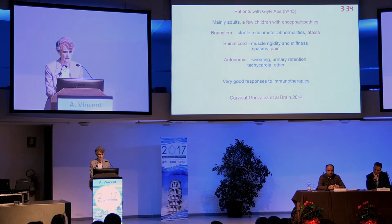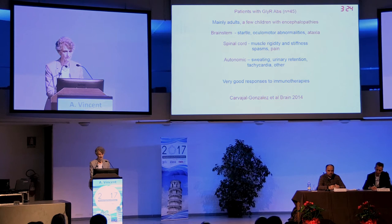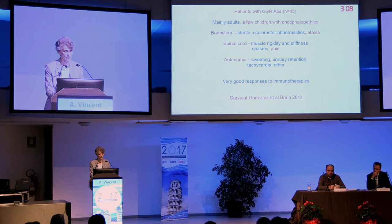Patients with glycine receptor antibodies - there are some children, but they tend to have encephalopathy in a fairly broad sense. The brain stem disturbance is quite striking, and ataxia is part of that. Pain is worth pointing to, because neurologists don't pay enough attention to it. Those patients do in general make a very good response to immunotherapy, although they often need some pharmacological help to return to work.